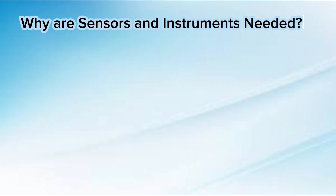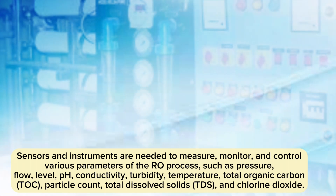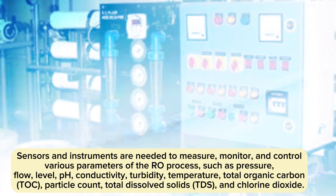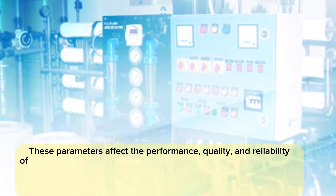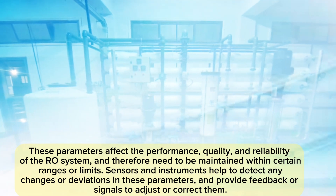Why are sensors and instruments needed? Sensors and instruments are needed to measure, monitor, and control various parameters of the RO process, such as pressure, flow, level, pH, conductivity, turbidity, temperature, total organic carbon (TOC), particle count, total dissolved solids (TDS), and chlorine dioxide. These parameters affect the performance, quality, and reliability of the RO system and therefore need to be maintained within certain ranges or limits. Sensors and instruments help to detect any changes or deviations in these parameters and provide feedback or signals to adjust or correct them accordingly.